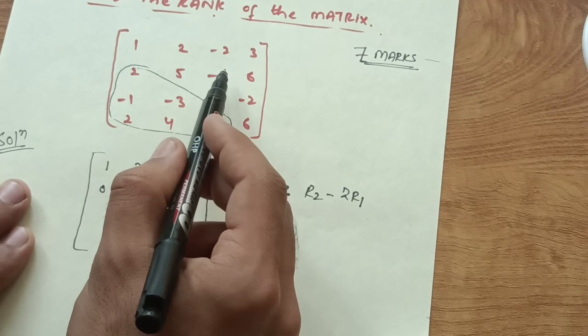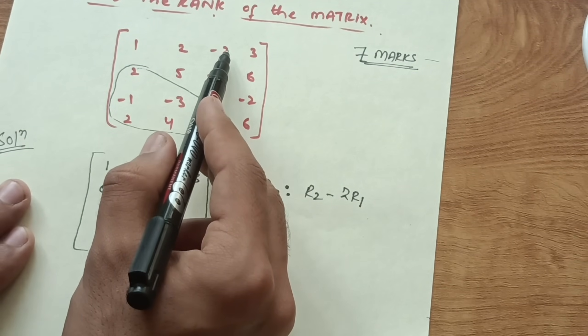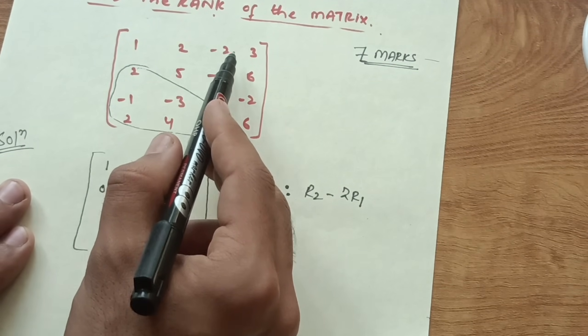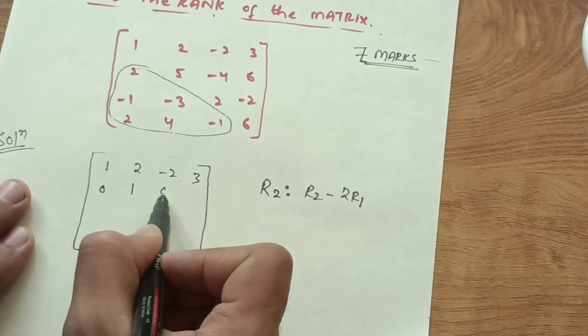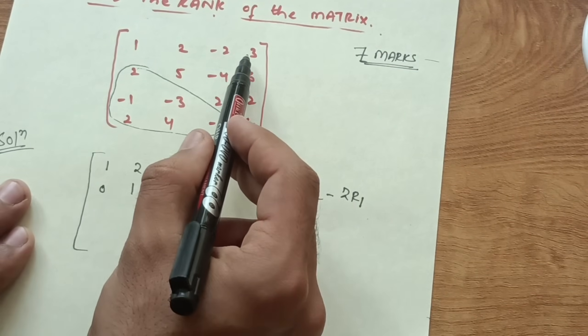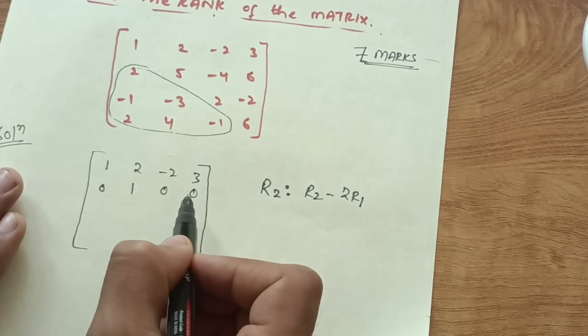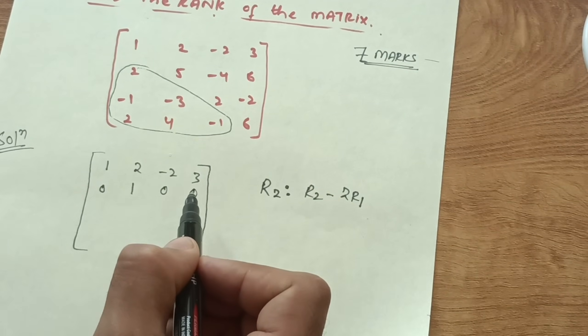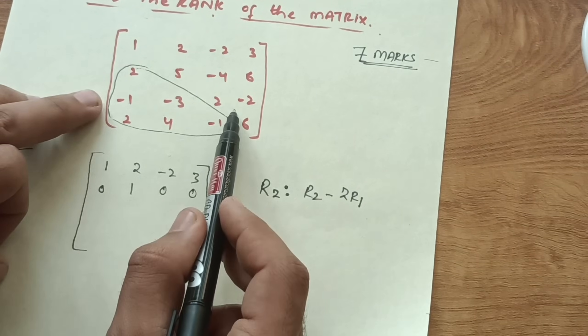Continuing: -4 + 4 = 0, and 6 - 6 = 0. So after this first transformation, row 2 becomes [0, 1, 0, 0]. That completes the first transformation step.